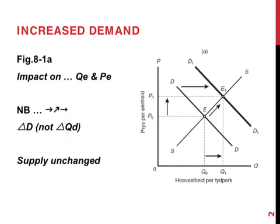Let's start with an increase in demand. The figure on the right shows an increase in demand and the whole demand curve moving towards the right. The result is a new equilibrium at point E1, with an increase in the equilibrium price and an increase in the equilibrium quantity. The supply curve remains unchanged.